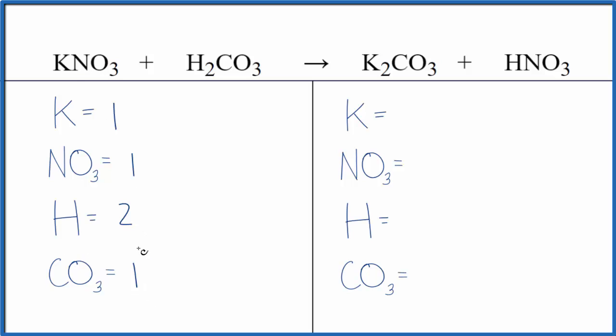And you can see this makes this a lot neater, makes it faster. You'll get the same answer in the end, it's just this is quicker. So two potassiums here, we have just the one nitrate, one hydrogen, and then the carbonate, one of those. So it makes it a lot easier to see what we need to do.